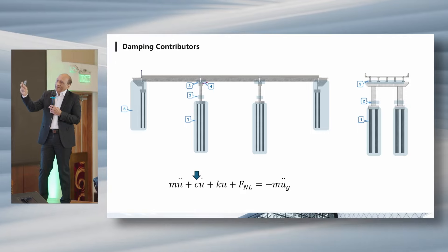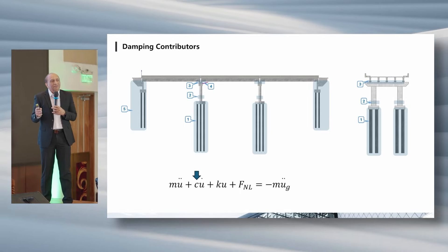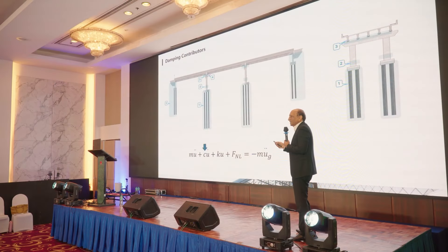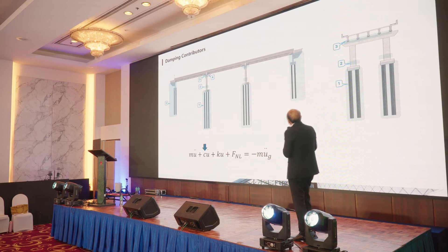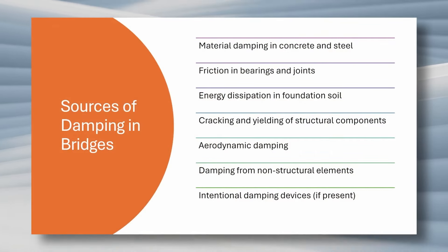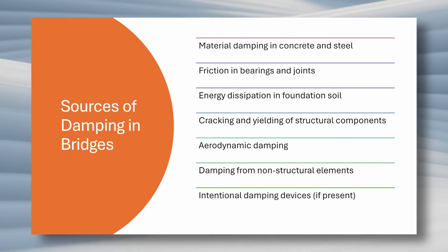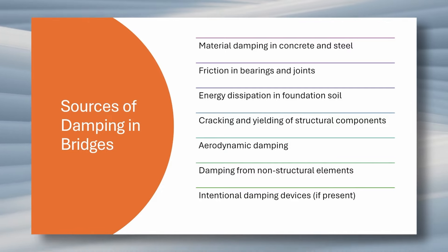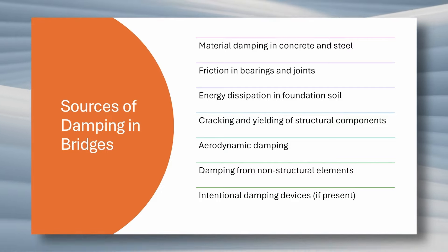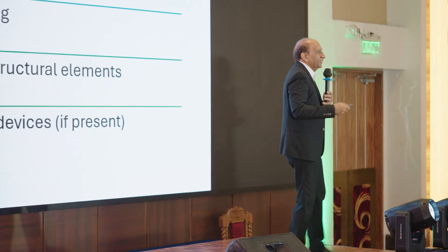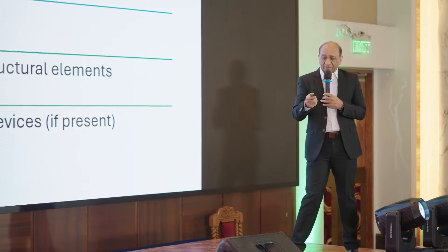Damping comes from devices, design, and nonlinearity combined. It is also nonlinear — not a linear property — varying with displacement and velocity. Sources include natural material damping, friction damping, energy dissipation in foundations, cracking and yielding, aerodynamic damping, damping from non-structural elements, and intentional damping devices. If you want to manage damping, you can manipulate these sources in various ways.